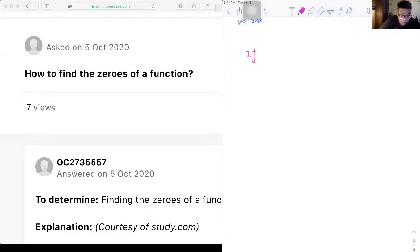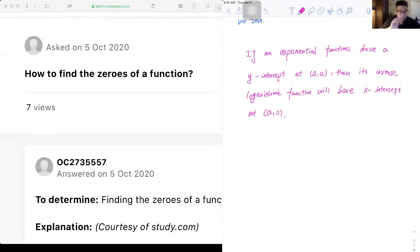So if an exponential function has a y-intercept at (0, a), then its inverse log function will have an x-intercept at (a, 0). I think that's all we got for this question.